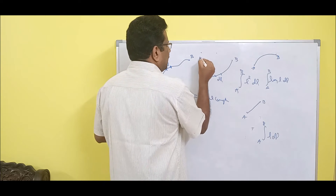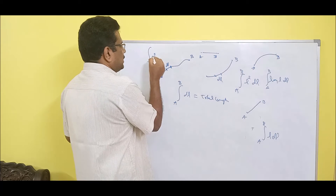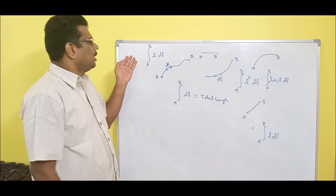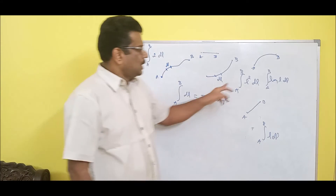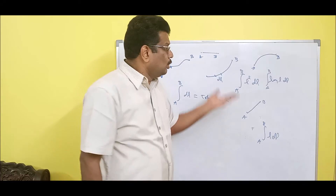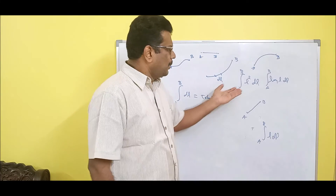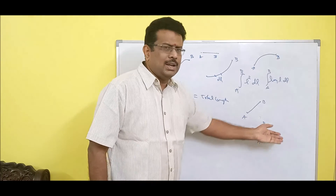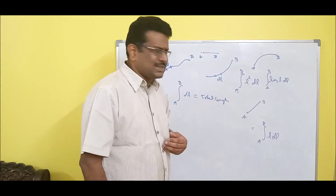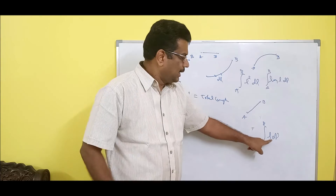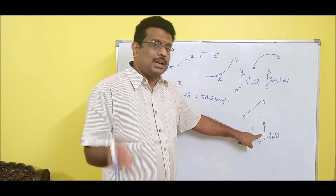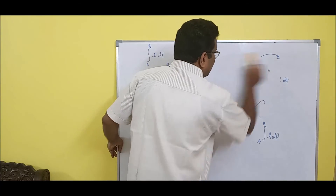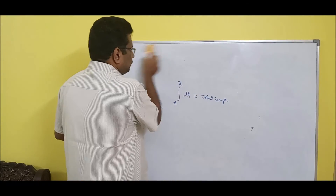If A and B have a constant like 2, the integration is just 2 × integral of dL from A to B, and 2 is a constant taken outside. The basic point in engineering is to understand what each term means: DL is the elemental length, L is the linear path, integration is continuous addition, A is the starting point, and B is the ending point. Try to remember all these concepts.